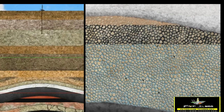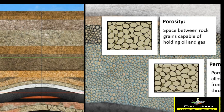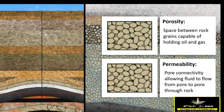Because they have good porosity and good permeability, most of the world's production comes from conventional reservoirs compared to unconventional ones. Unconventional reservoirs are very tight reservoirs — they have low porosity and low permeability.